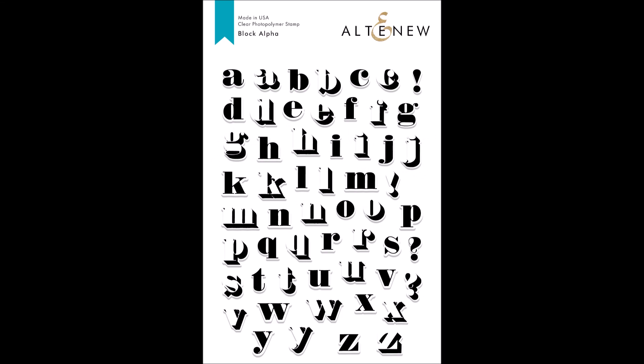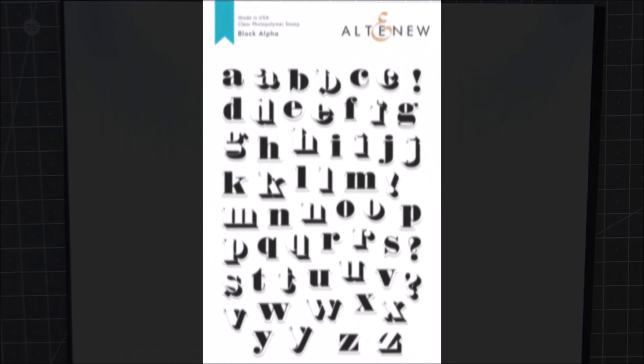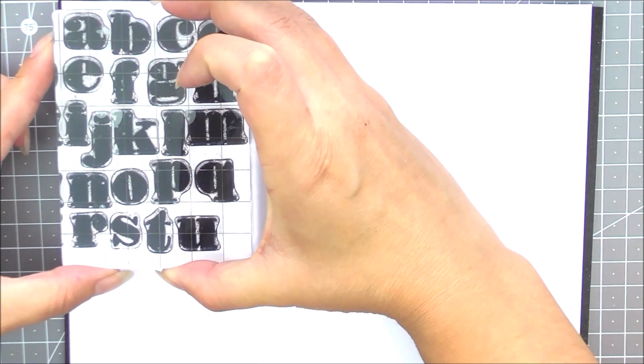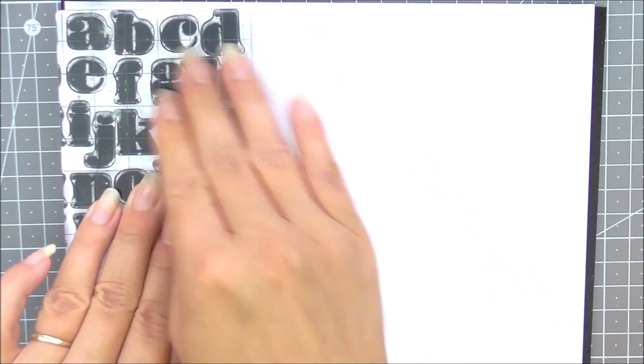This is Block Alpha Stamp Set from Altenew. This is a 6 by 8 inch clear stamp set containing 56 individual stamps.